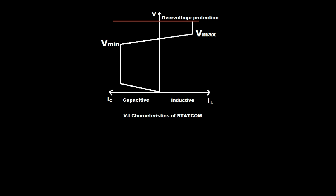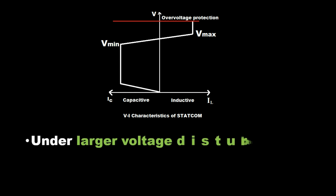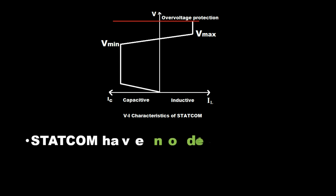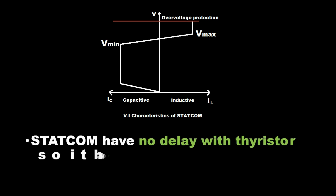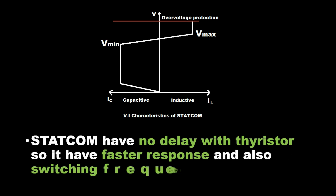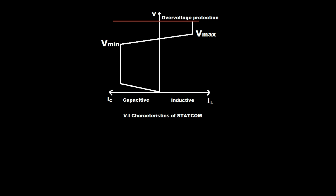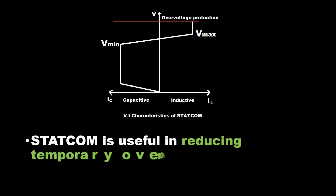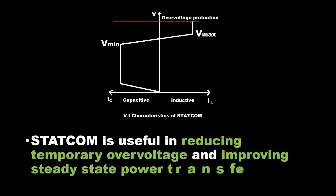Under larger voltage disturbances, STATCOM is more useful. STATCOM has no delay with thyristors, so it has a faster response and higher switching frequency. It is useful in reducing temporary overvoltage and improving steady-state power transfer.